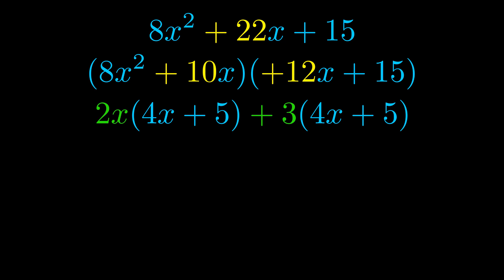Notice also how what remains inside of the parentheses is the same in both cases. The blue values are the same. Those blue values will become one of our factors, and we will combine the two green values, the GCFs that we pulled out, to get the other one. And that is our fully factored equation.